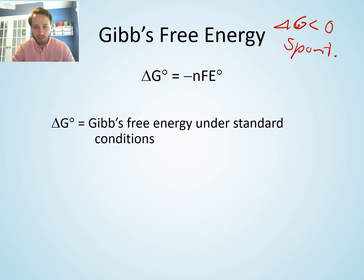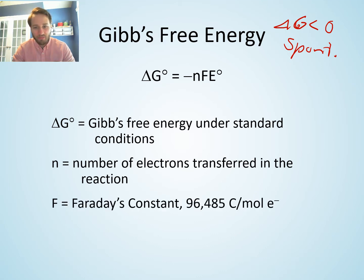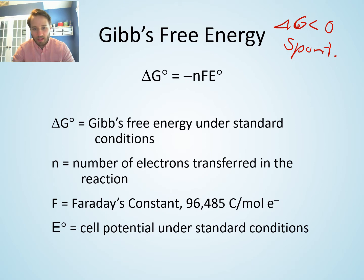In this equation, delta G is your Gibbs free energy under standard conditions, N is the number of electrons being transferred, F is Faraday's constant — 96,485 coulombs per mole of electrons — and E° is the standard cell potential for your electrochemical reaction.